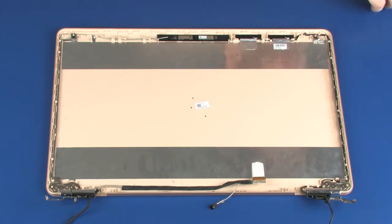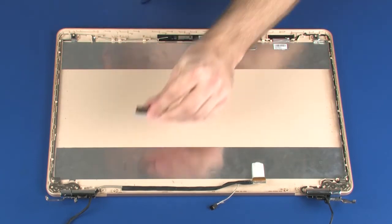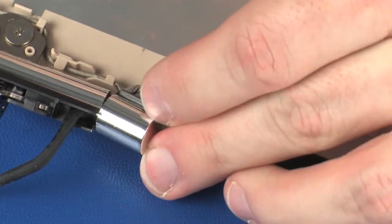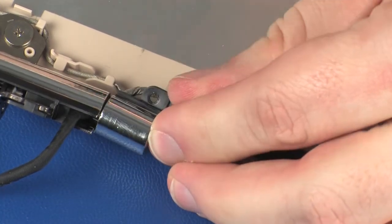Replacement. Route the display panel cable through the routing channel in the left hinge cover. Insert the left hinge cover into the left display panel hinge, and place the left hinge cover onto the alignment pin on the display enclosure.